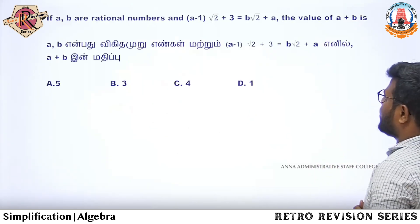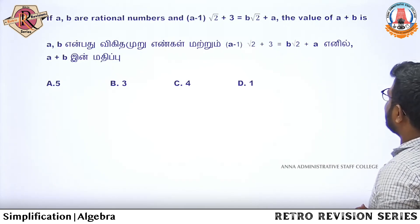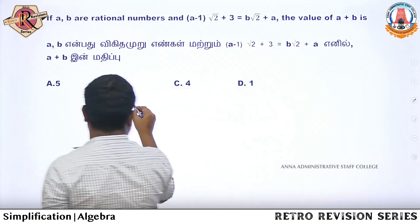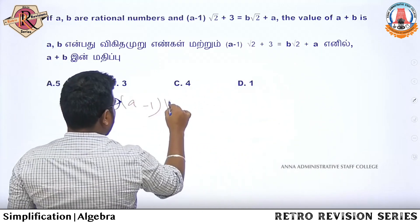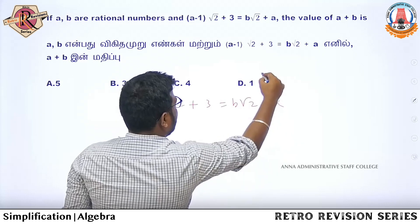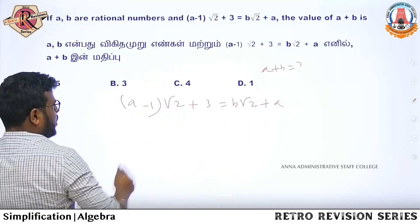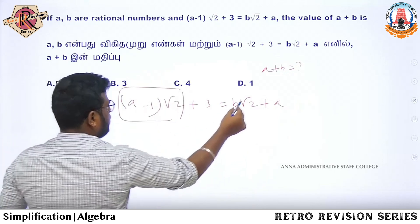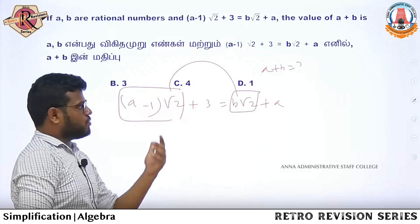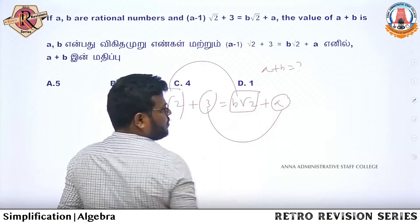Question number 4: If a and b are rational numbers and (a minus 1) root 2 plus 3 equals b root 2 plus a, find the value of a plus b. So a minus 1 root 2 plus 3 equals b root 2 plus a. We separate rational and irrational parts. One root 2 equals m minus b. This is the format.